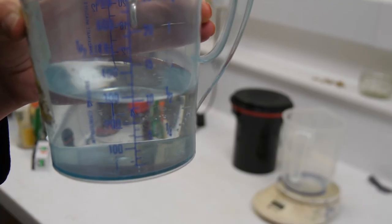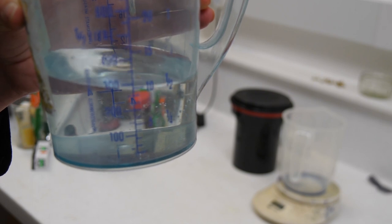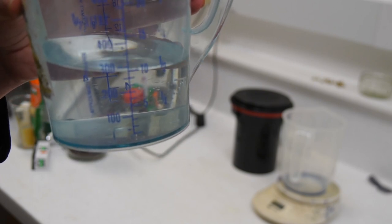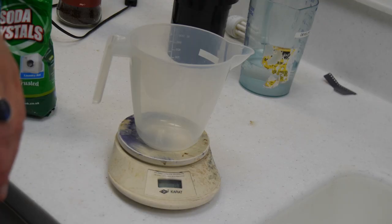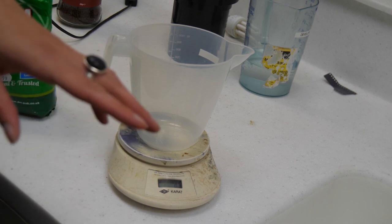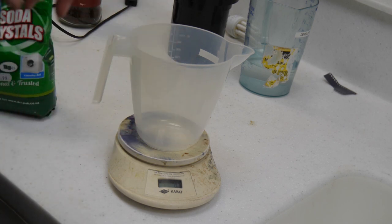So the first thing that I'm going to do is make 300 milliliters of water in a jug. I'm going to measure out 90 grams of soda crystals, so I'll do that now.